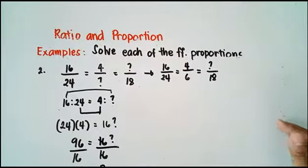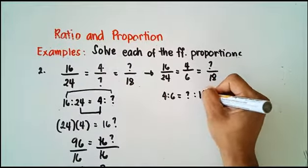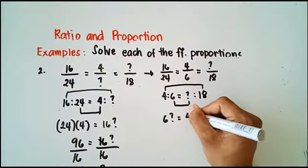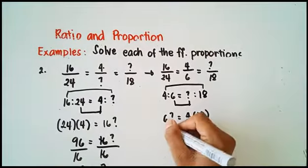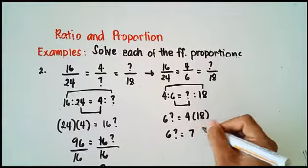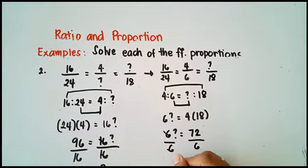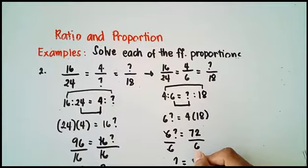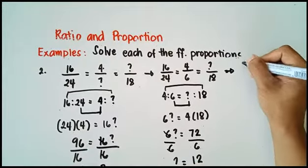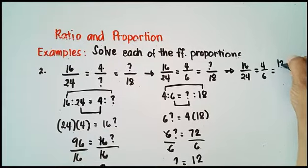So now we have 16 over 24 equals 4 over 6 equals question mark over 18. Let's take the second and third ratios: 4 is to 6 is equal to question mark is to 18. So 6 times question mark equals 4 times 18. That is 6 times question mark equals 72. Divide both sides by 6 — question mark equals 12. So 16 over 24 equals 4 over 6 equals 12 over 18.